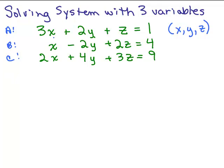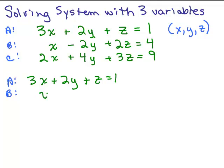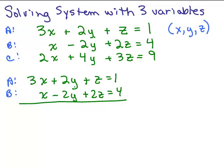So working with equation A and B, we have 3X plus 2Y plus Z equals 1, and X minus 2Y plus 2Z equals 4. I don't have to multiply either equation by anything because I have a 2Y and a negative 2Y. Adding the two equations, the Y terms are eliminated, giving me 4X plus 3Z equals 5.